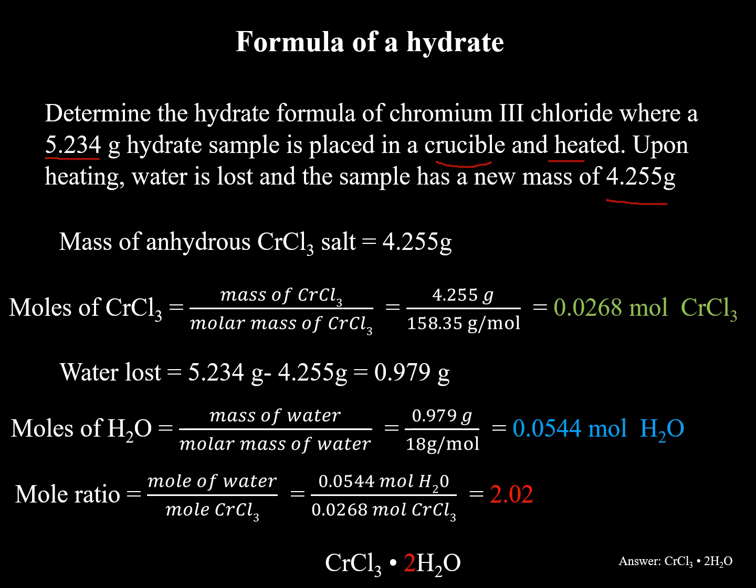So again, the goal is to find the hydrate formula, so how many water molecules are attached. So the key is to determine the amount of moles of CrCl3. Hopefully you know from lecture that if you want to find the moles of a compound, and you're given the mass, you divide by the molar mass of that compound. So in this case, the mass of CrCl3 is 4.255 grams. We divide it by the molar mass of CrCl3, 158.35 grams per mole. This we determine from the periodic table. You notice the grams will cancel. Here it will become 0.0268 moles of CrCl3. So that's step one.